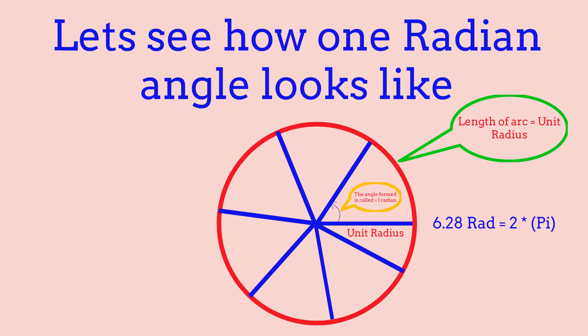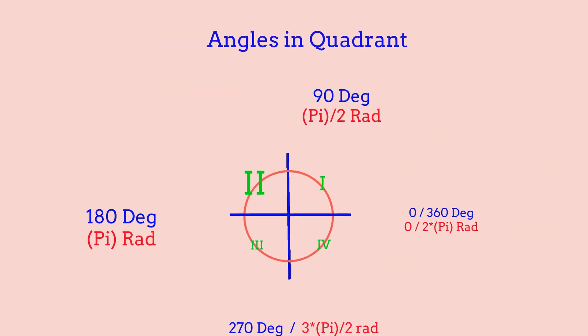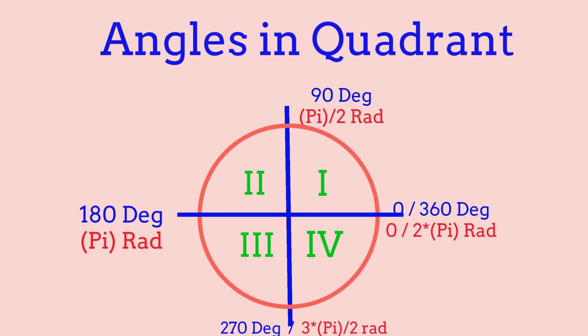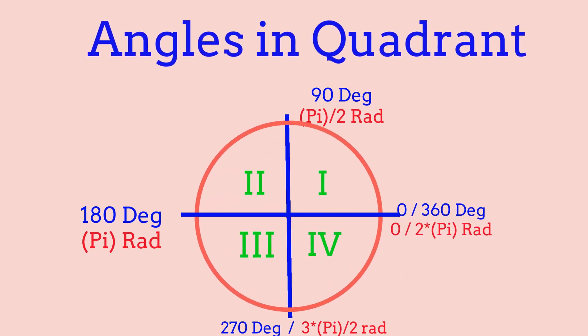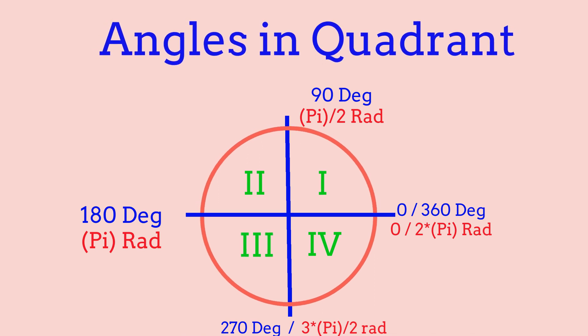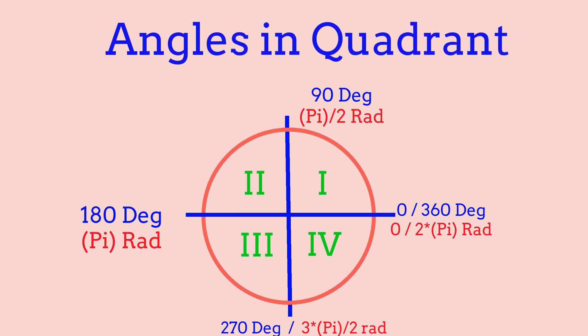Now we're going to look at a quadrant of how degrees and radians look like. As you can see, 0 or 360 degrees is 1 full rotation, and 0 or 2 pi radians is also 1 full rotation. In the circle, 0 goes to 90, to 180, to 270, and back to 360. For radians, that would be 0, then pi over 2, then pi — which is 180 — then 3 pi over 2, which is 270, and 2 pi for 360.